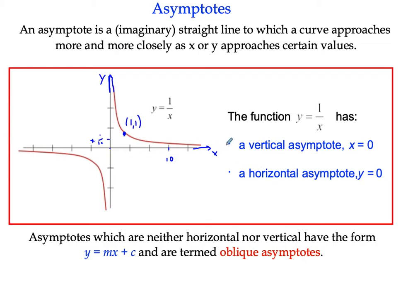So we're really talking about very large values of x and y. And if we can find an imaginary line that these functions tend to, then these are asymptotes. And we tend to draw them as dotted lines.